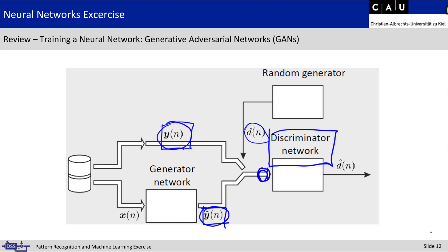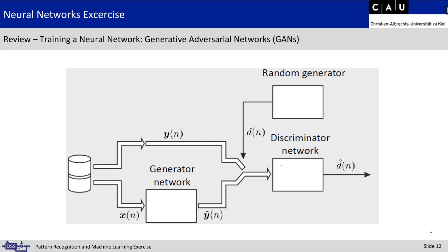If the discriminator network can no longer find a difference between those two outputs, we know our generator network is pretty good. The training of the two networks in GANs is done in an alternating fashion: we first train one network to improve it, then train the second network to improve it, and so on.